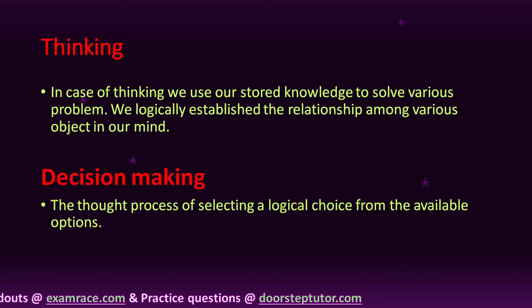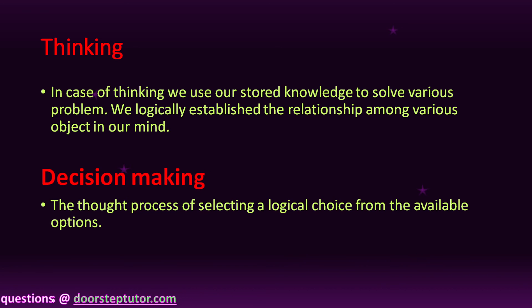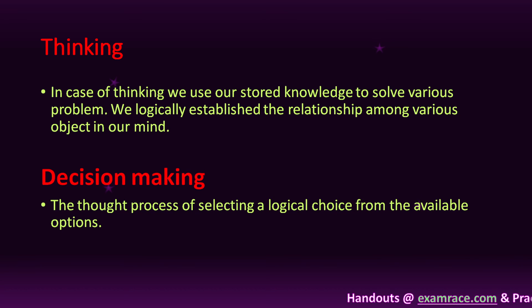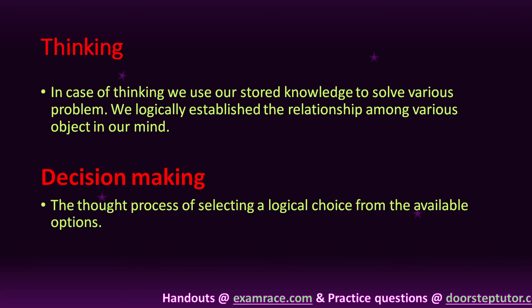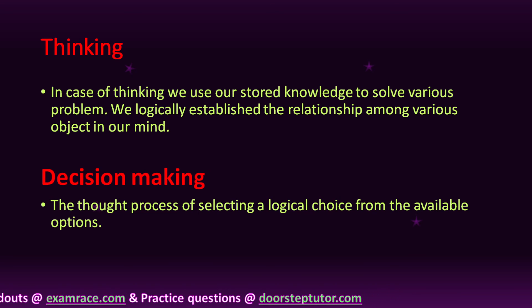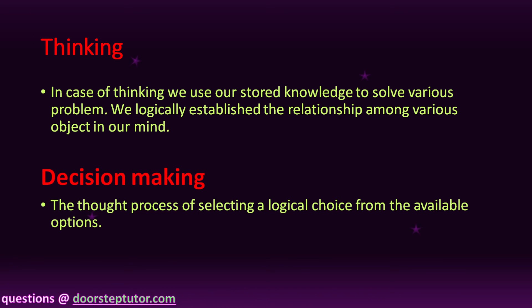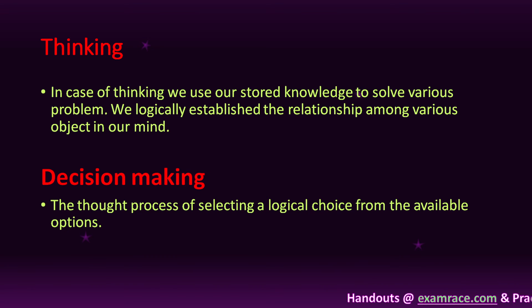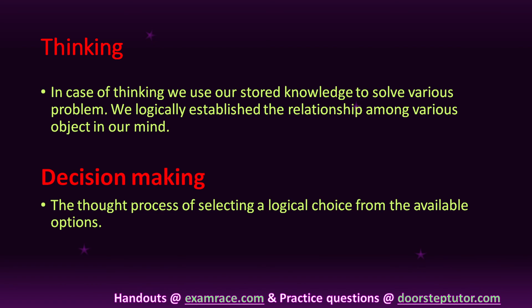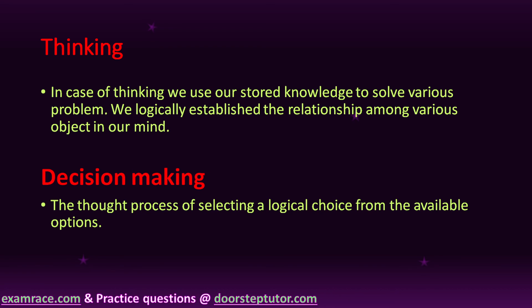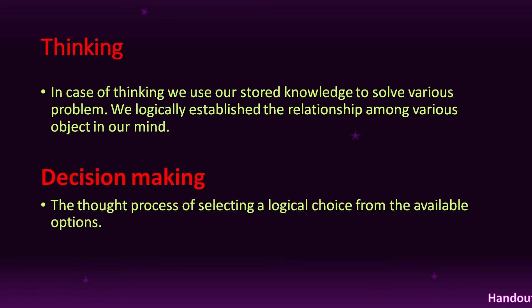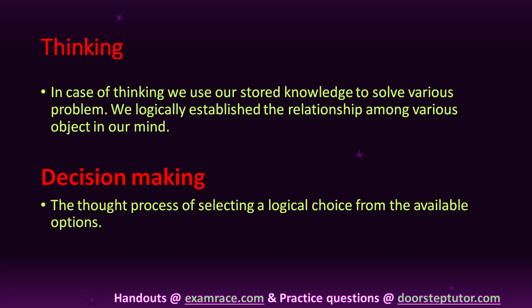The next type is decision making. Decision making is the thought process of selecting a logical choice from the available options. After thinking, you begin decision making. For example, when preparing for a NET/GRF exam, you first think about clearing the exam, then make decisions with your parents, family members, and teacher about how to prepare. After thinking, you decide something — this is decision making.